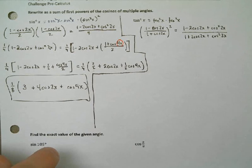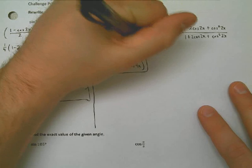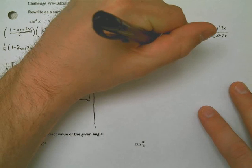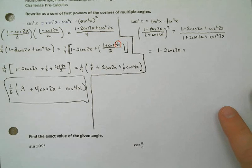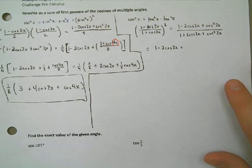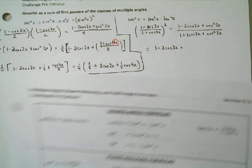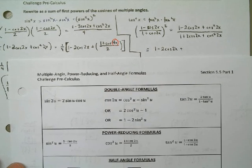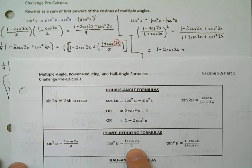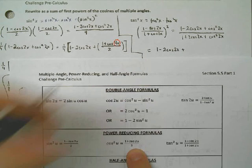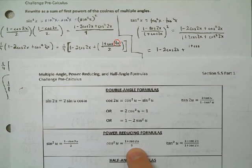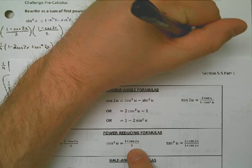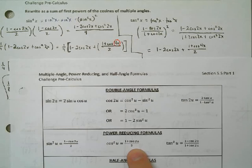So this ends up being 1 minus 2 cosine of 2x plus, and now cosine squared of 2x we can write as, let's see, cosine squared can be written as 1 plus cosine double angle over 2. So that becomes 1 plus the cosine of, and now since I'm using the power reducing formula, I have to double it again up to 4x. That's all over 2. And that 4x is the thing that you're going to miss.